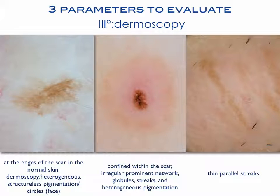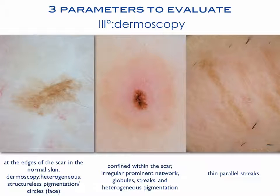In recurrent nevus, we have in dermoscopy the presence of pigmentation within the scar with irregular prominent network, globules, or streaks, and heterogeneous pigmentation. In melanotic reactive pigmentation, we have thin parallel streaks.